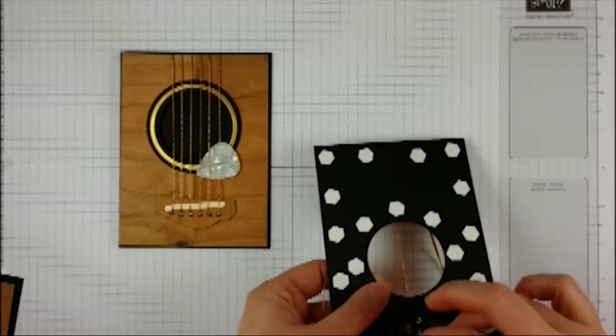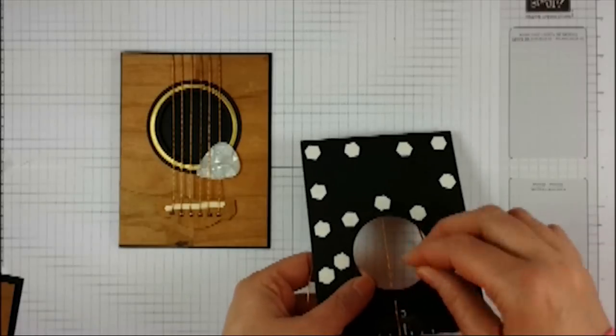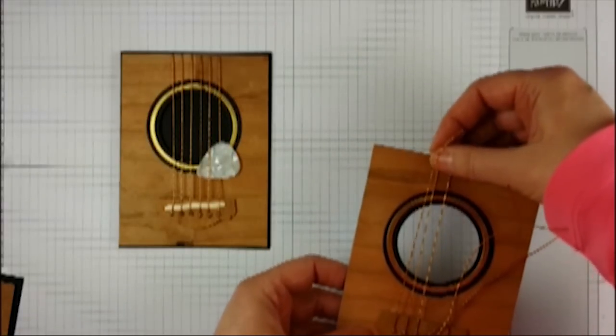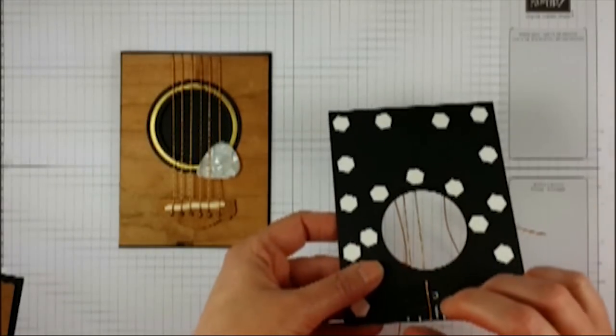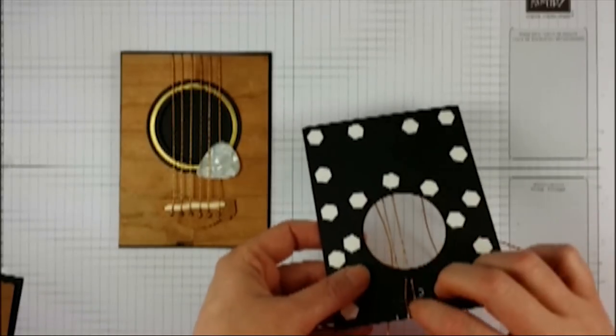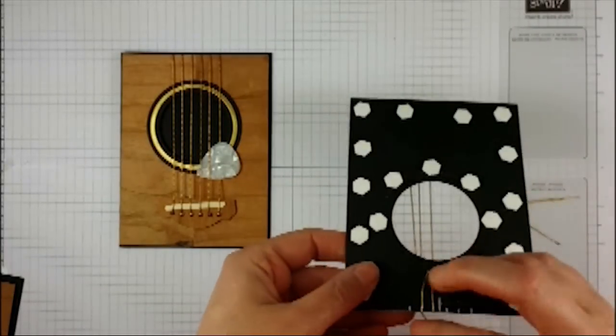I'm going to start in the middle and you want to pull these taut. You want to make sure you get these tight because after a while it will relax a little bit and you don't want your strings flopping around.